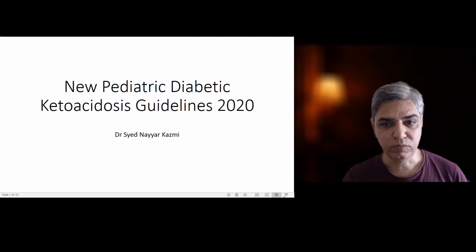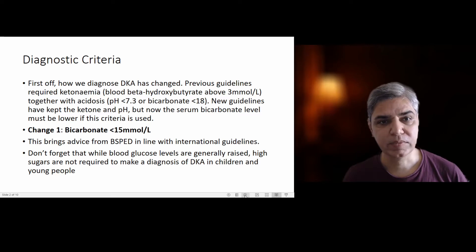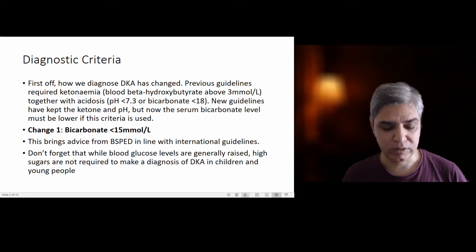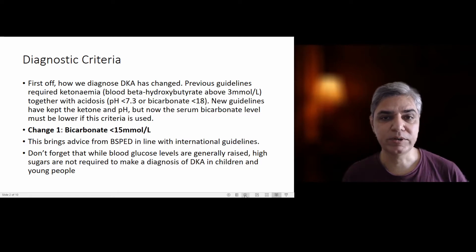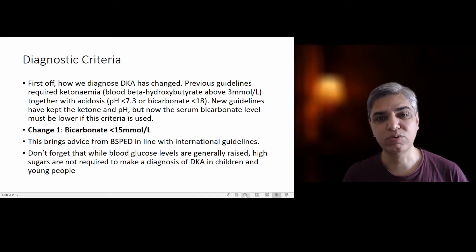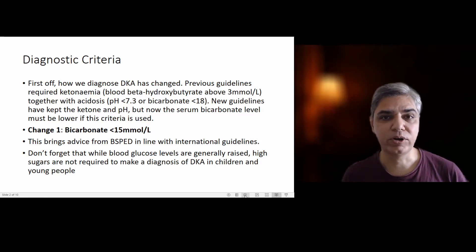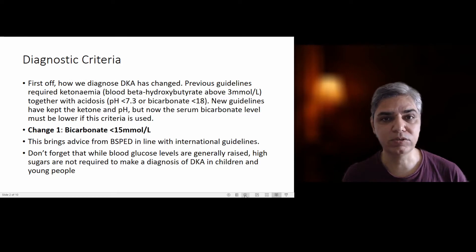The first change is regarding the diagnostic criteria — the way we used to diagnose diabetic ketoacidosis in the past. The previous guidelines required a pH of less than 7.3 or a bicarbonate of less than 18 with high blood glucose levels. Now the new guidelines state that the bicarbonate should be less than 15 millimoles per liter. So now you need a pH of less than 7.3 or a serum bicarbonate less than 15 millimoles per liter, bringing the BSPE guidelines in line with international guidelines.